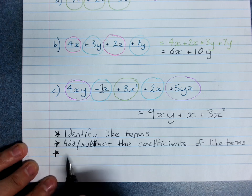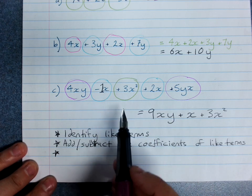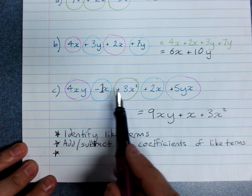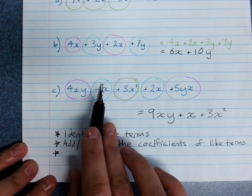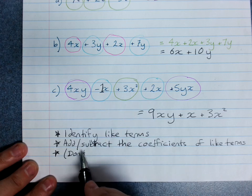And remember, no changing the pronumeral part. No seeing, oh look I think I've got x and 2x, it's going to be x squared. No, you're just counting x's. Don't change the pronumeral part.